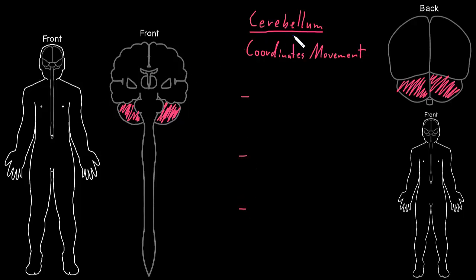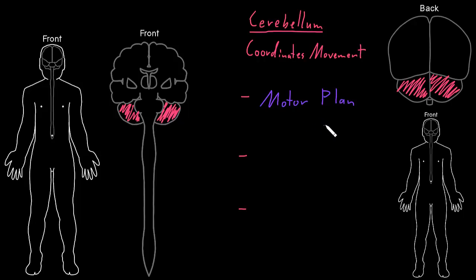The first thing the cerebellum needs to do is it needs to get information about the motor plan. The motor plan involves which muscles need to contract, at what intensity and what duration — how strongly to contract those muscles, and for how long, to do some kind of movement that you want to do. In other videos we can go into more detail on how the motor plan is developed up in areas of the cerebral hemisphere that plan movements.